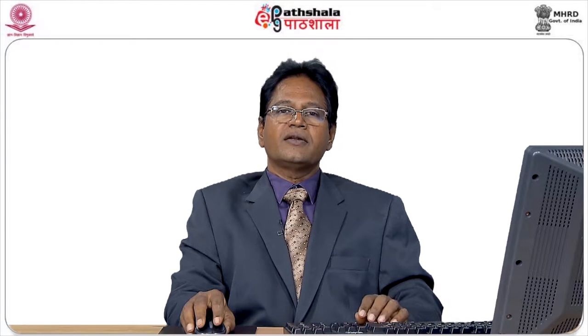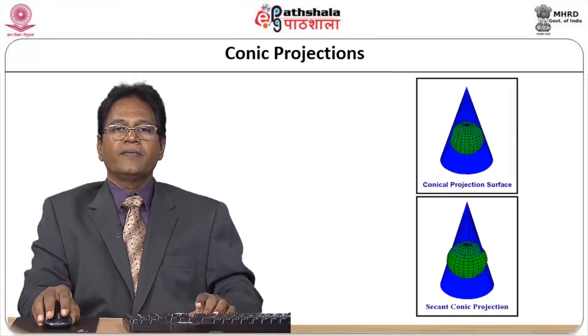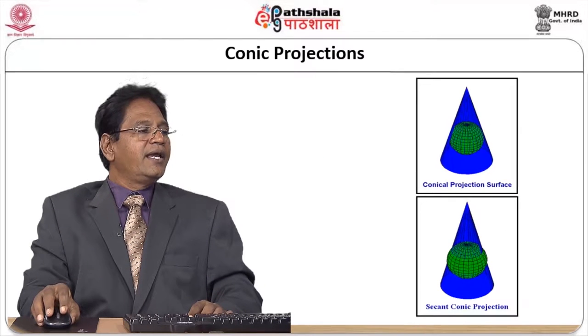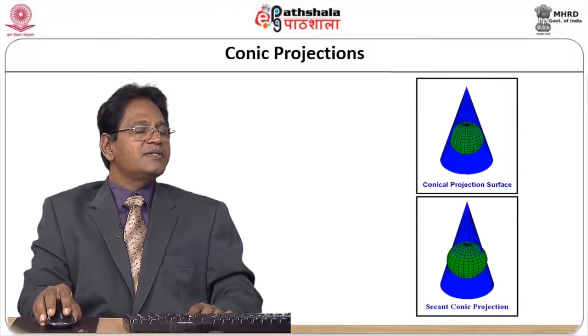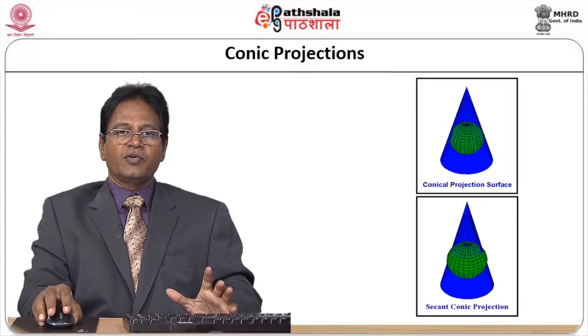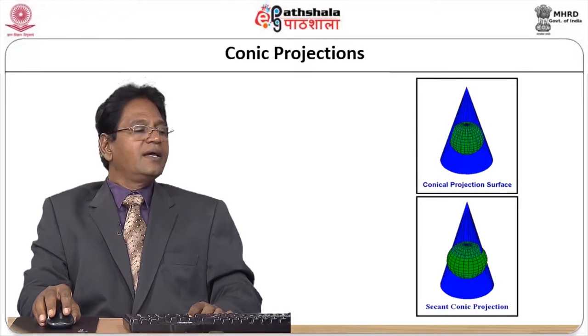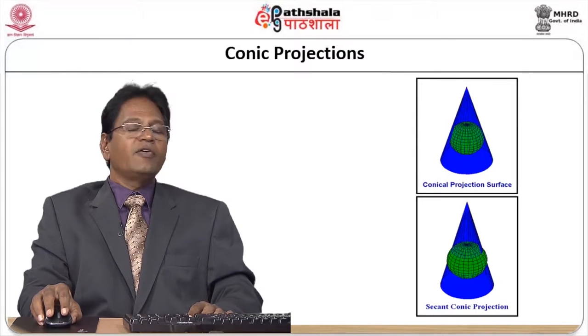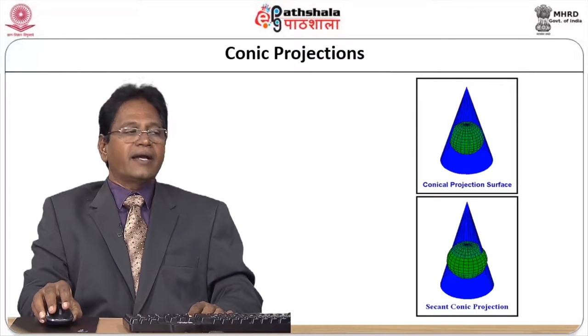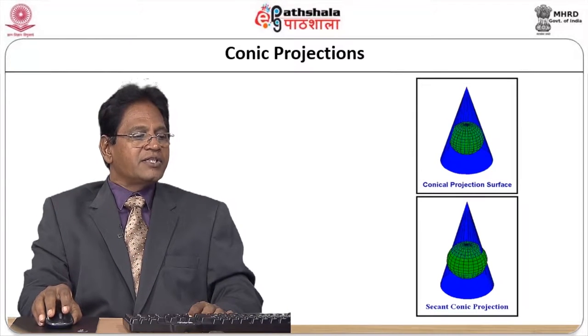Let us see what types of projections are normally used with conic surfaces. The first one is your equal area projection — Albers and Lambert are two projections which are being used. Then we have the conformal projection, again Lambert in nature.